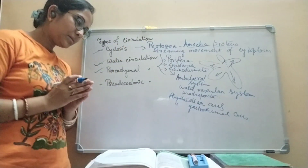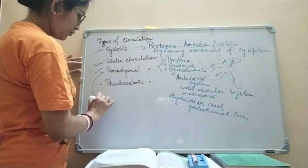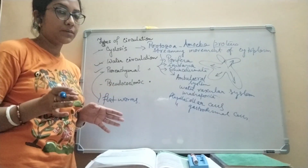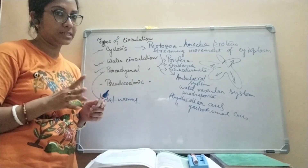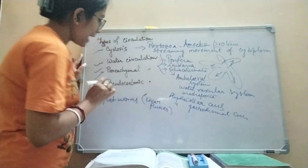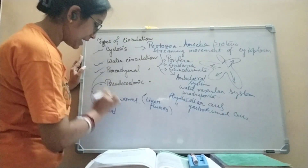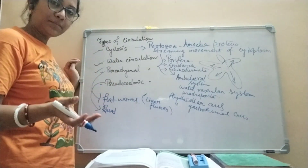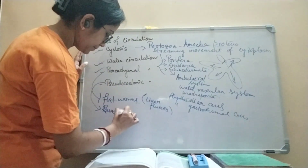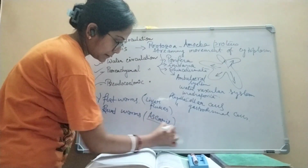Parenchyma circulation is found in the case of flatworms, such as liver fluke, which fall under phylum Platyhelminthes. Parenchyma is the interstitial fluid present in the body cavity of flatworms. Pseudocoelomic circulation is found in the case of roundworms, which fall under phylum Nematoda or Nemathelminthes — for example, Ascaris lumbricoides.